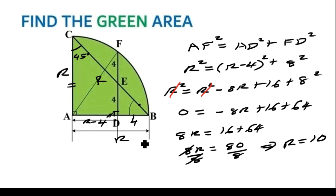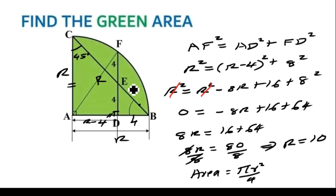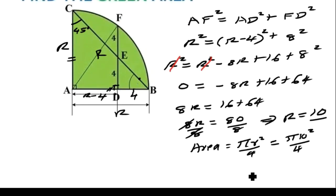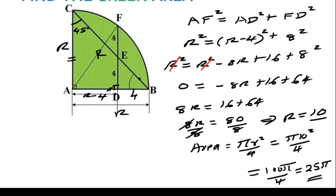Once you've found the radius to be 10, what is the area of the green region? The area is a quarter circle, and the area of a circle is pi R squared, divided by 4 because the green area is a quarter circle. Our R is 10, so that is pi times 10 squared over 4. 10 squared is 100, giving 100 pi over 4, which equals 25 pi units squared.